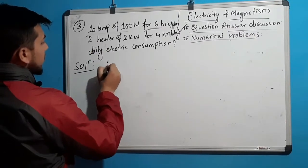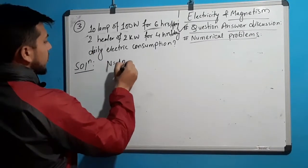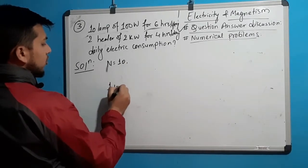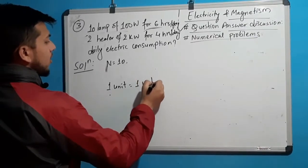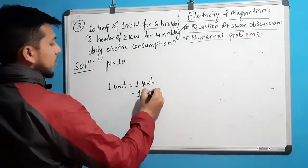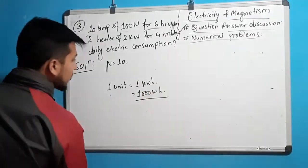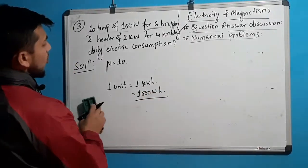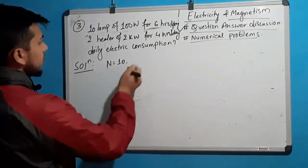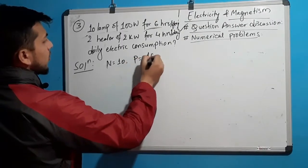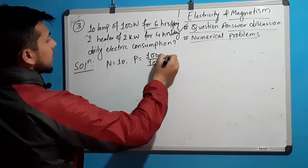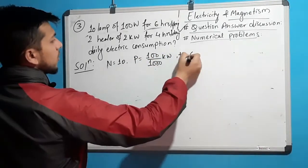We have 10 lamps. We know that 1 unit equals 1 kilowatt-hour. 1 kilowatt means 1000 watt used for 1 hour equals 1 unit. So we have to convert watts into kilowatts by dividing by 1000. Power P equals 100 divided by 1000 kilowatt, and time T equals 6 hours.